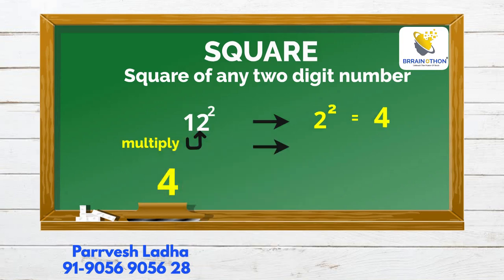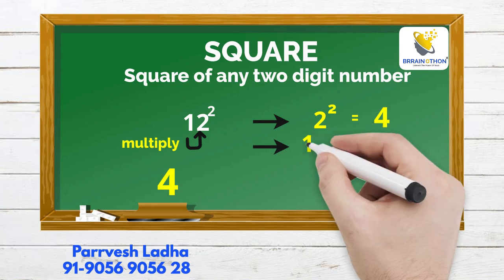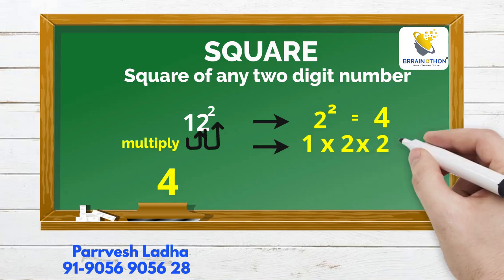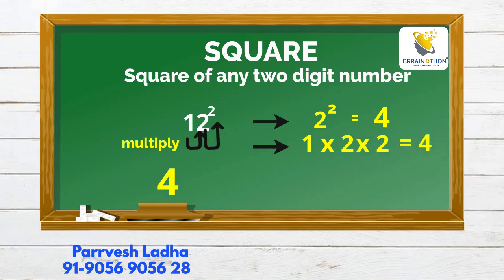Then the second step is to multiply the first digit and second digit number, and then multiply with the power number 2, which gives us 4. We write 4.